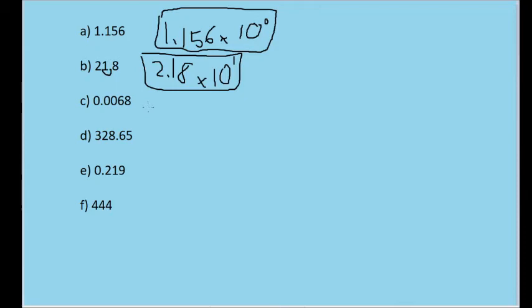For 0.0068, it's a bit trickier, but still not terribly complicated. To make this value follow our criteria, we'll need to move the decimal place three spaces to the right, which will increase the number's value.